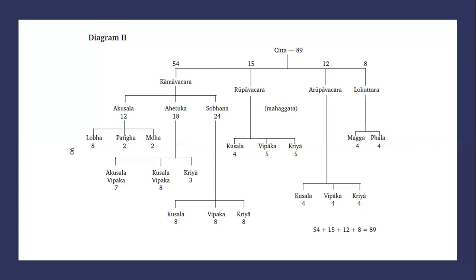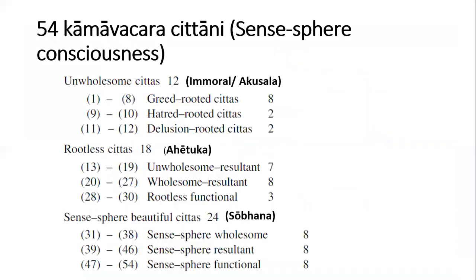We'll look at the 54 kama vachara chitta and how they are subdivided. They are further subdivided based on jati, their ethical nature, and hetu, the presence or absence of roots. The first category is the 12 akusala chitani, the 12 unwholesome or immoral chitta. The second group are the 18 ahetuka chitani, the rootless chittas. The last group are the 24 sobana chitani, the sense sphere beautiful chitta.